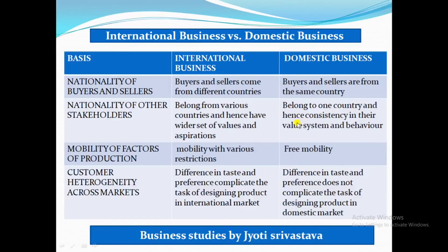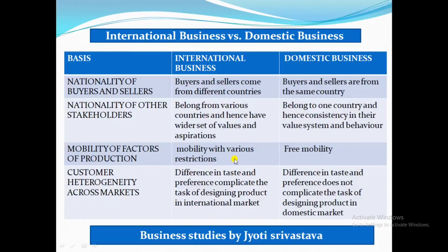Regarding the mobility of factors of production such as labour and capital: in domestic business there is free mobility — if you need labour, you can easily hire within the country. But when you have to bring resources from outside the country, it involves a long procedure such as obtaining visas, and there are certain restrictions. So mobility of factors of production is restricted in international business.